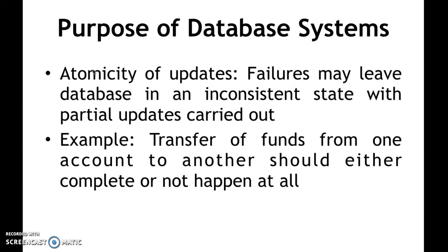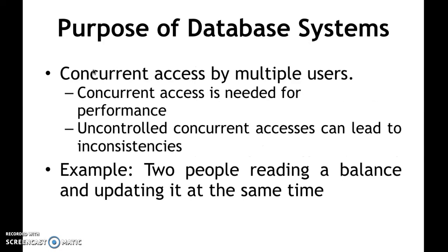Another problem was atomicity. For example, if something fails in the middle of a transaction, it should either complete or roll back so that it does not lead to an inconsistent state. For example, if I am moving money from account A to account B — I deduct the amount from A but don't deposit it in B because of a failure — the entire transaction should roll back. That was not possible in file systems, but it has been taken care of in database management systems.